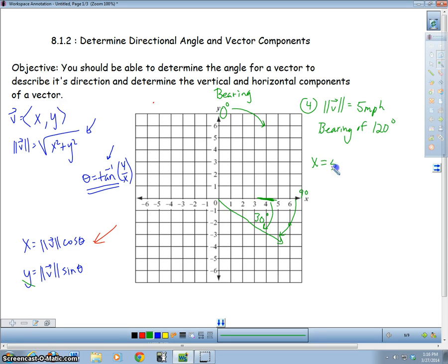But we use the same formula. So X equals 5 times the cosine of 30 degrees. And we're going to get 4.3. Again, I didn't draw it to scale. So miles per hour and Y is going to be 5. Well, hold on. I'm going to be careful here because our Y is negative. It's down here. So we're going to make sure we put negative 5 times the sine of 30 degrees. And that's going to give us negative 2.5. Okay. All right. So here's my last example.